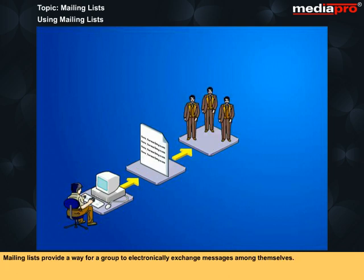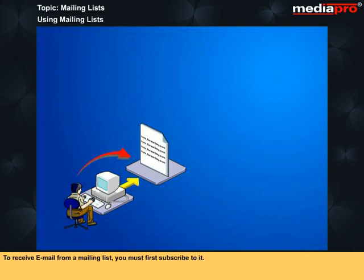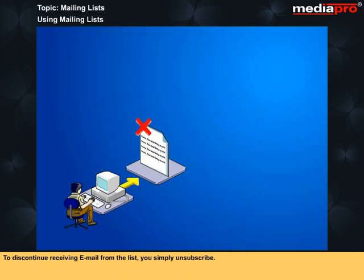Mailing lists provide a way for a group to electronically exchange messages among themselves. To receive email from a mailing list, you must first subscribe to it. Once you are on a list, you will begin receiving all mail messages sent to the list. To discontinue receiving email from the list, you simply unsubscribe.